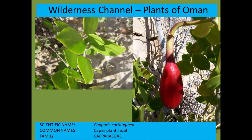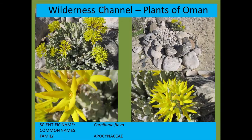Capparis cartilaginea is a very common creeping species found in Dhofar. It produces really large fruits which are said to be edible — certainly a favorite of birds, and the red color is an attractant.